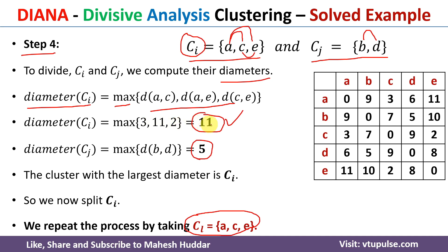This process repeats — after splitting Ci into new sub-clusters, we again calculate diameters to decide which cluster to divide next, continuing until we reach the final desired clusters. In this video I have shown one full iteration of the Divisive Analysis hierarchical clustering algorithm. I hope the concept is clear. If you liked the video, please like, share, subscribe, and press the bell icon for regular updates. Thank you for watching.